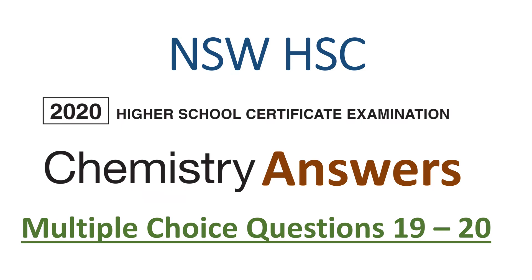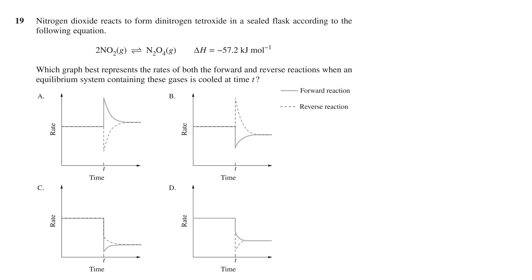In this video, we'll go over the answers to questions 19 to 20 of the 2020 NSW HSC Chemistry Exam. The first question is 19.